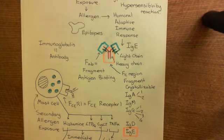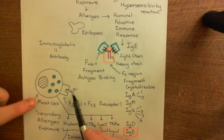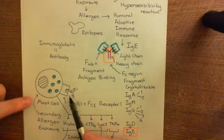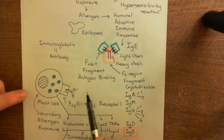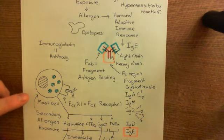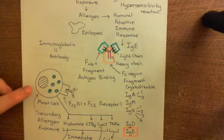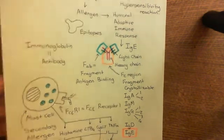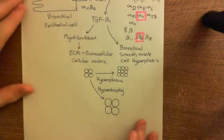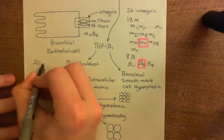IgE levels gradually fall as the plasma cells producing it are removed from the blood and bone marrow. All that remains is IgE mounted on FcεRI receptors on mast cells, which has a much longer half-life lasting months. Eventually, if no more IgE is made, one would stop being allergic. But when re-exposed to the allergen, a secondary immune response is triggered.